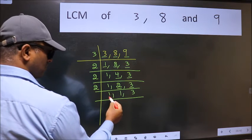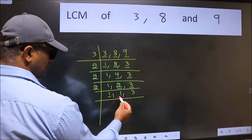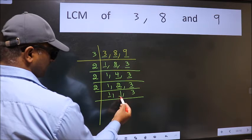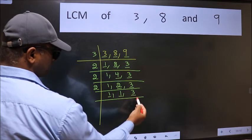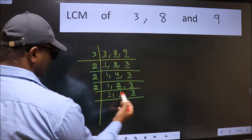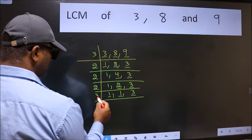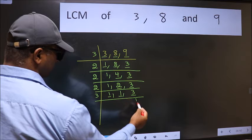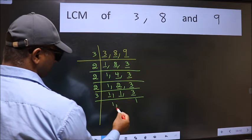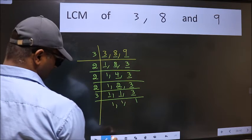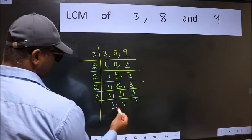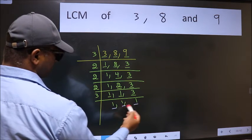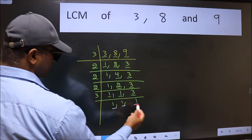Now we got 1 here and here. So focus on to the next number 3. 3 is a prime number, so 3 times 1 is 3. We got 1 in all 3 places.